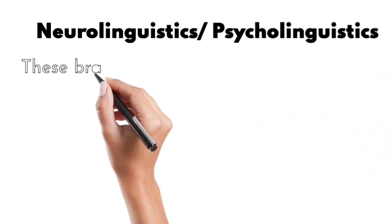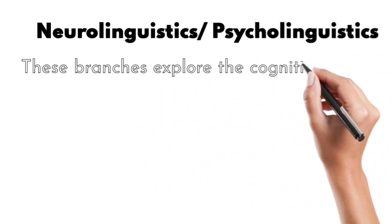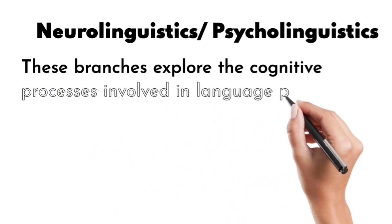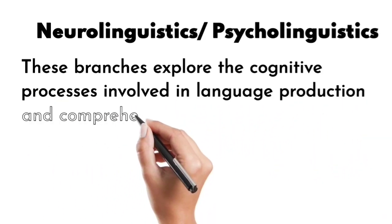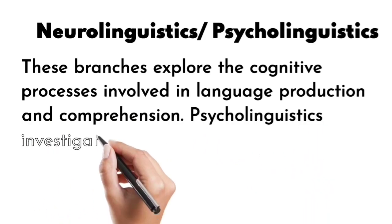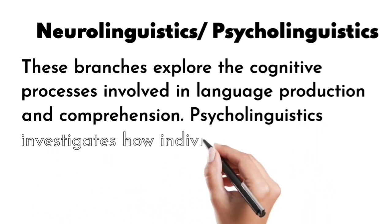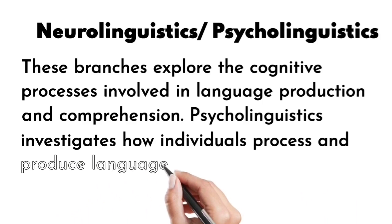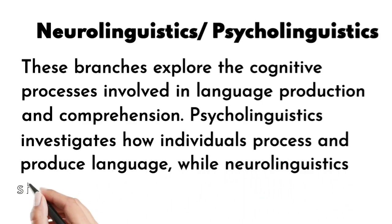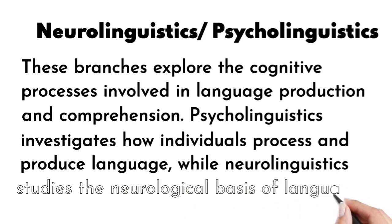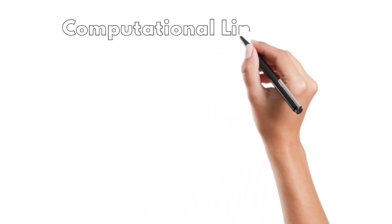Neurolinguistics and Psycholinguistics: These branches explore the cognitive processes involved in language production and comprehension. Psycholinguistics investigates how individuals process and produce language, while neurolinguistics studies the neurological basis of language.